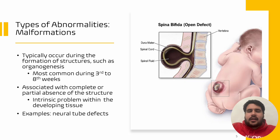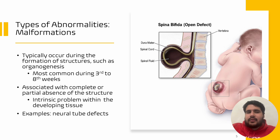So now let's move on to covering the three main types of abnormalities that we briefly discussed in the introduction. First, let's focus on malformations. Malformations typically occur during the formation of structures such as organs, and they are most common during the third to eighth weeks of embryonic development. Furthermore, malformations have been associated with either a complete or partial absence of the structure, and this highlights an intrinsic problem within the developing tissue. Neural tube defects are a common example of malformations.